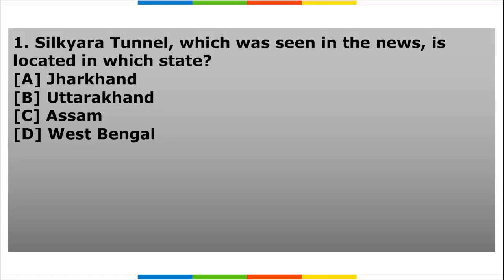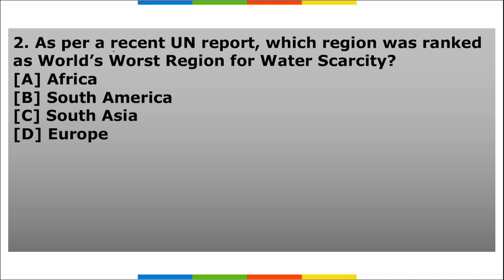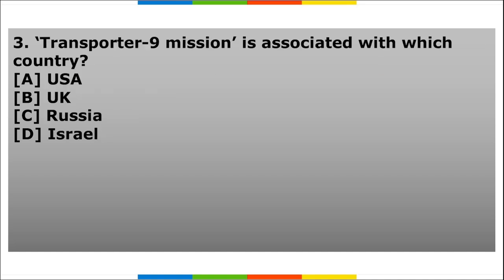Homework questions: First, Silkyara Tunnel, which was seen in the news — in which state is it located? Second, as per a recent UN report, which region was ranked as the world's worst region for water scarcity? Third, the Transporter 9 mission — which country is it associated with and what is the mission about? I want to see maximum participation from students watching this video. If you find the session interesting, like the video and comment below.